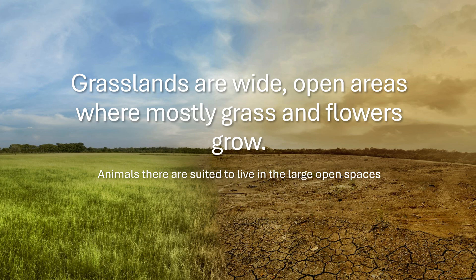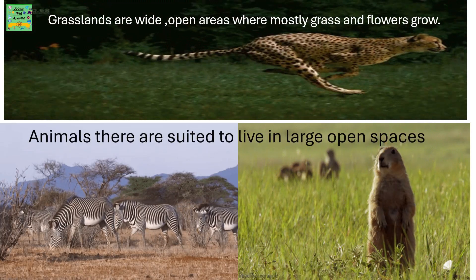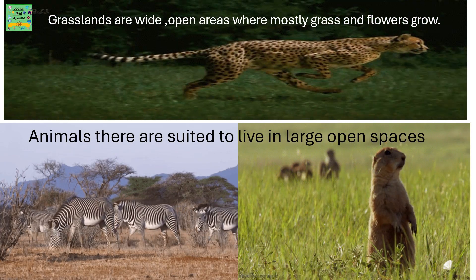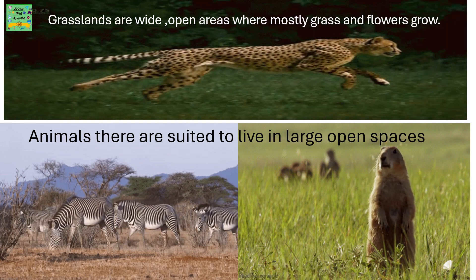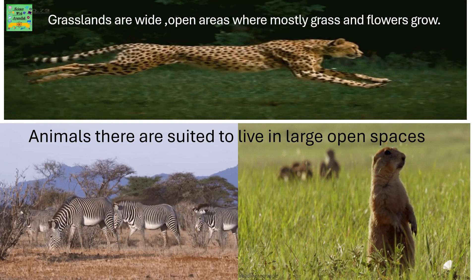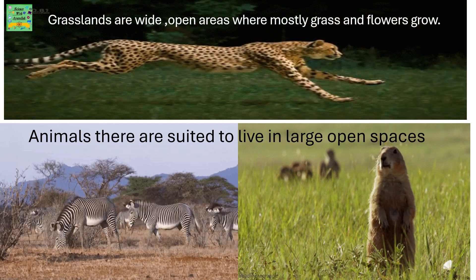Grasslands are wide, open areas where mostly grass and flowers grow. Animals there are suited to live in such a large open space. Two examples of animals living in grasslands are zebras and cheetahs.